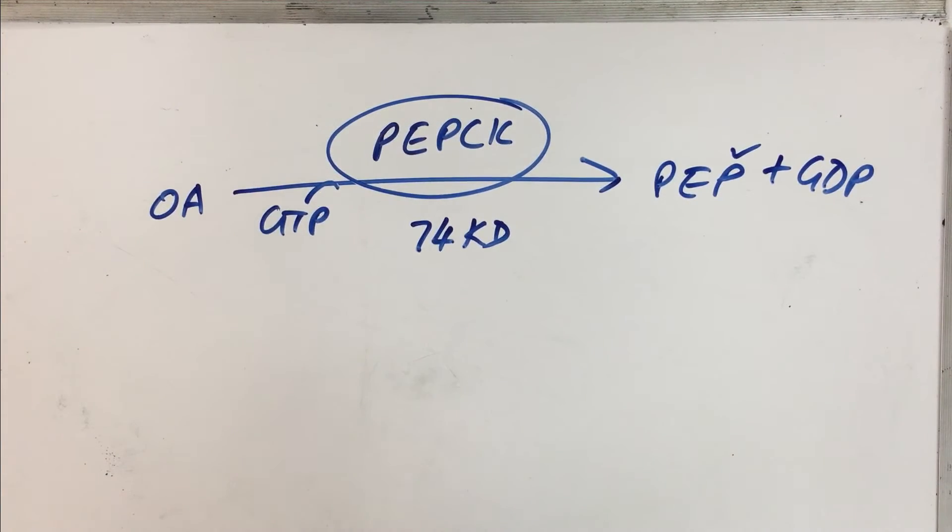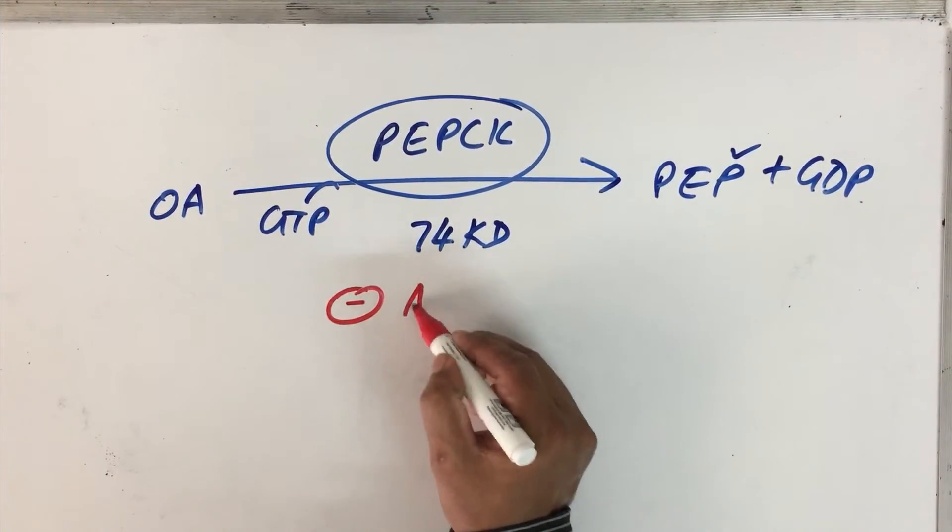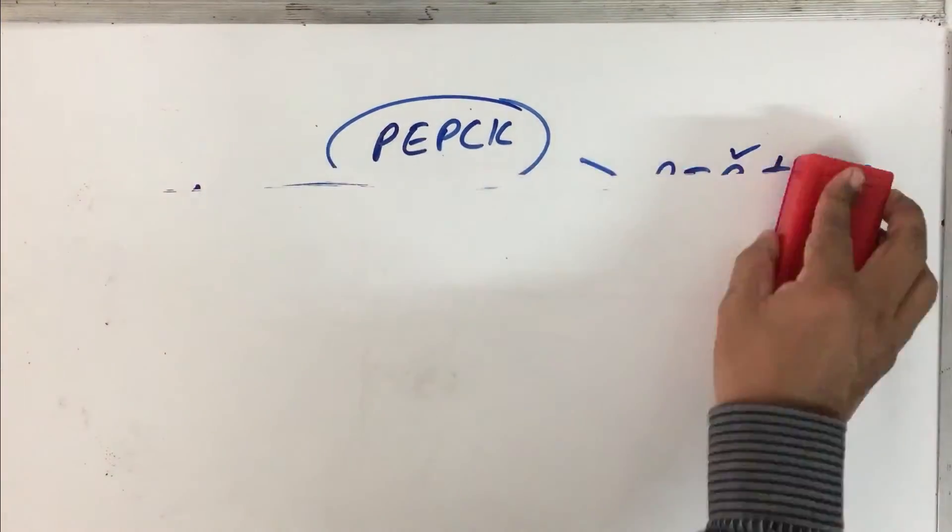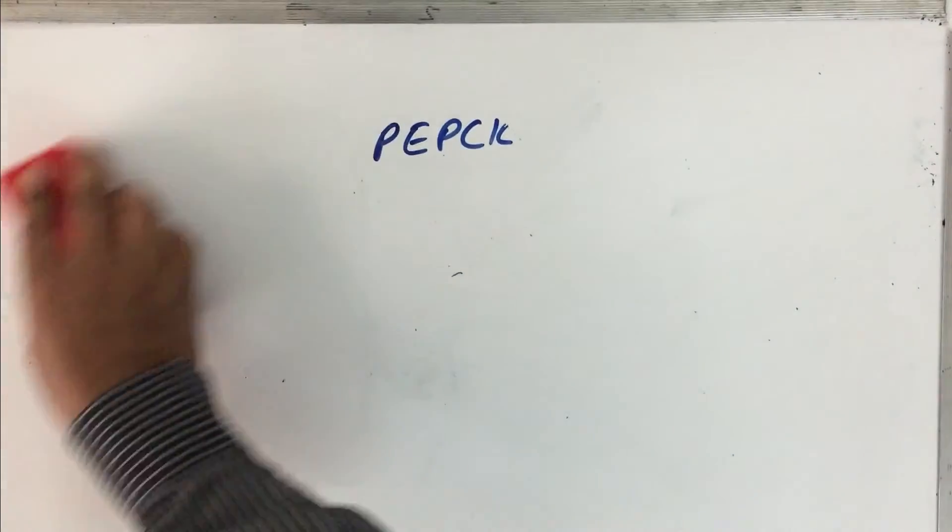Now this enzyme can also be regulated in two ways: allosteric regulation as well as transcriptional activation. It is inhibited by the level of ADP. Now what is important at the moment is how these hormones can play a role in transcribing PEPCK gene. Let us look at that, it's very interesting.